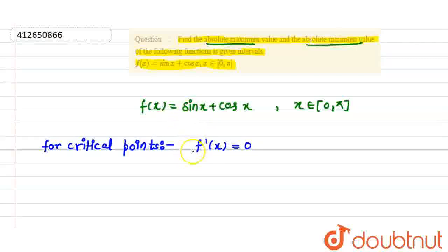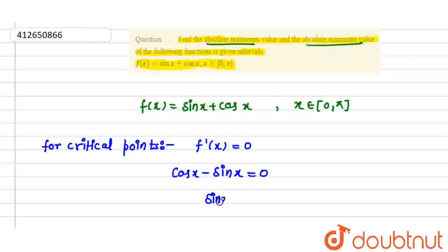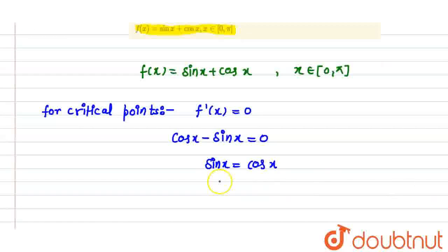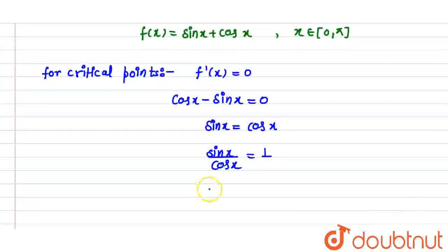तो इसका differentiation करेंगे। sin x का differentiation होता है cos x, और cos x का minus sin x, so cos x minus sin x = 0। तो इसका यह लिख सकते हैं कि sin x = cos x, और sin x upon cos x = 1, that is tan x = 1.